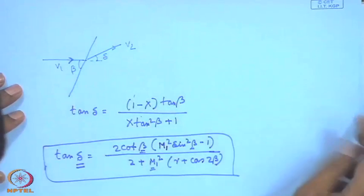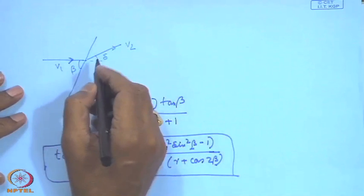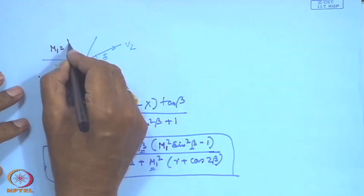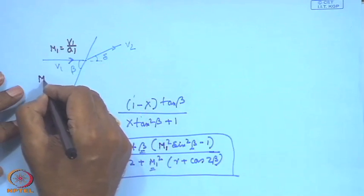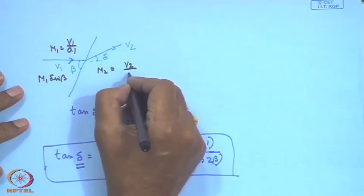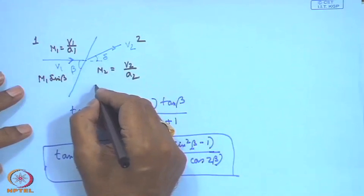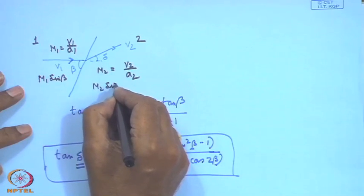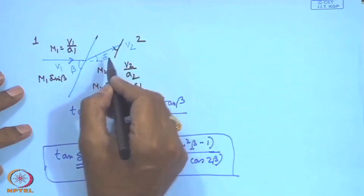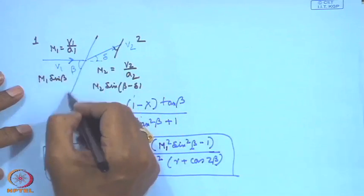What we discussed last class is that this oblique shock wave can be treated as a normal shock, provided the Mach number M1 is modified as M1 sin(beta), and the actual Mach number M2 is V2/a2. The normal component is M2 sin(beta minus delta), which is the angle made by velocity V2 with the line parallel to the shock wave.